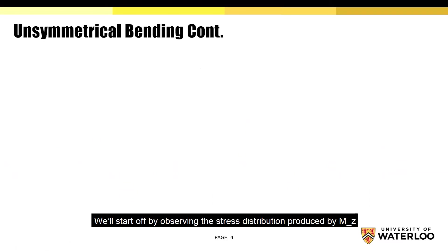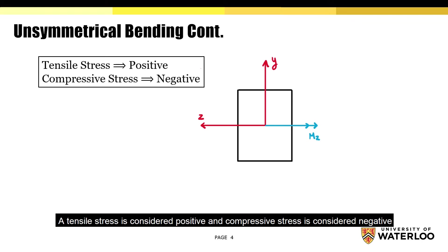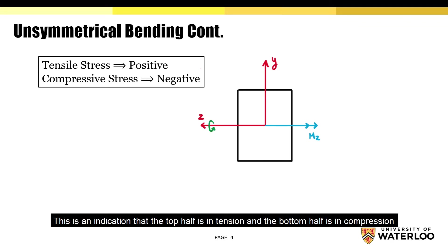We'll start off by observing the stress distribution produced by Mz. We'll be using the right-hand rule to figure out this distribution. Keep this in mind: a tensile stress is considered positive, and a compressive stress is considered negative. So if you point your right thumb towards the direction of the moment, which in this case is in the right direction, notice how your fingers curl from top to bottom. This is an indication that the top half is in tension and the bottom half is in compression.